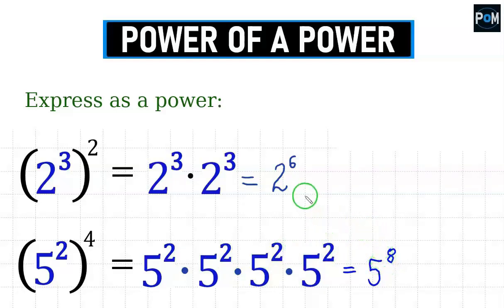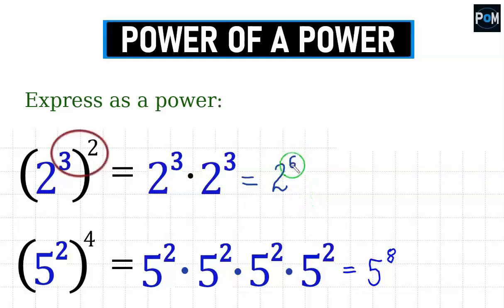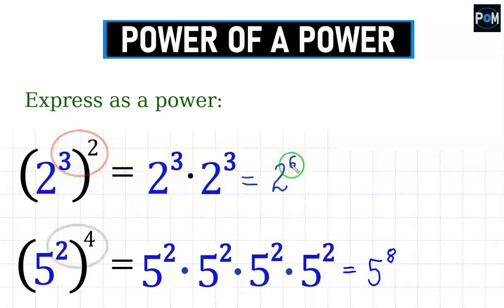Of course, we won't be writing out all these examples every time. There's a certain principle here. Where did this 6 come from? It turns out that we could have multiplied 3 and 2, and we get 6 from that. The same thing applies to the second example: 2 times 4 gives us 8. We'll skip the long elaboration from now on.